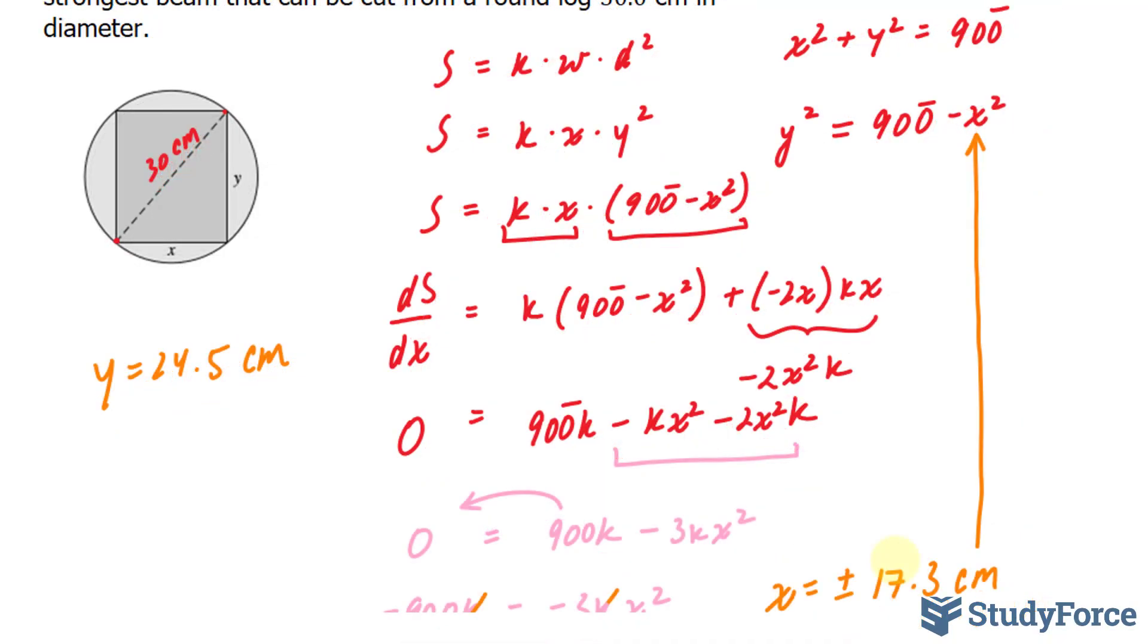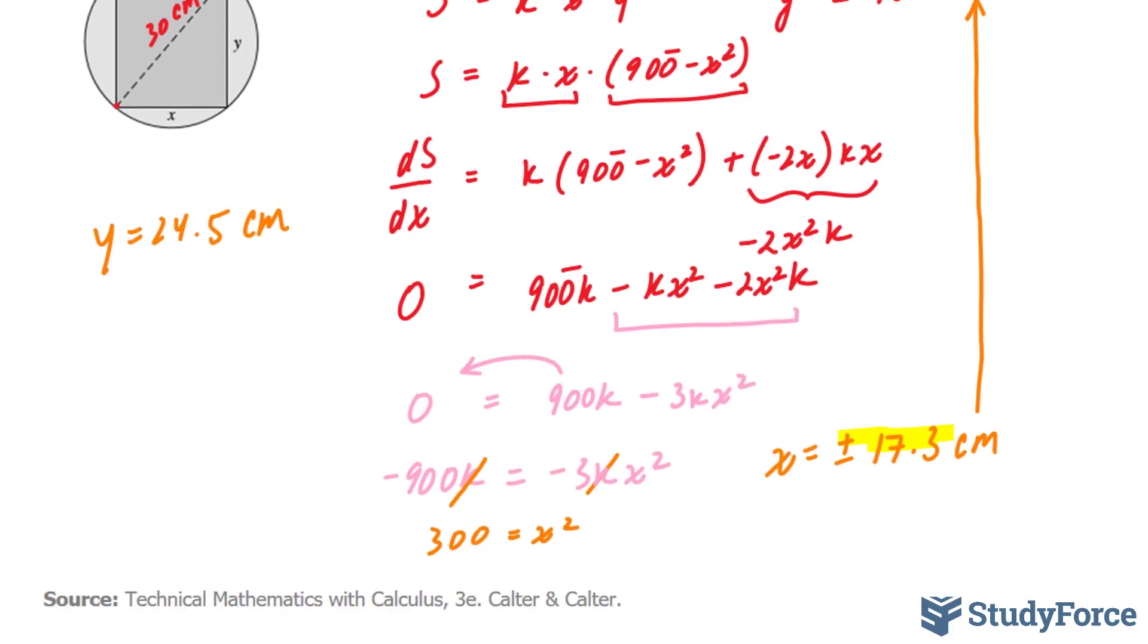Now we have to ask, does positive 17.3 actually give us the maximum or minimum strength? The way we test for that is we take the second derivative of our function, which was this.